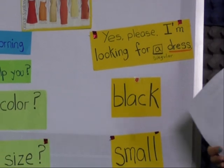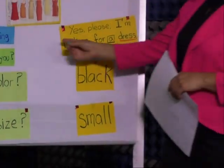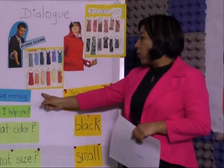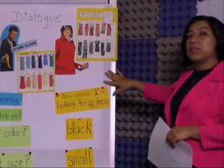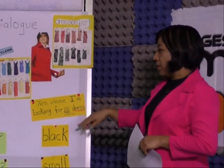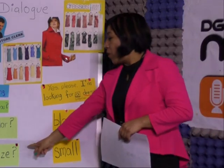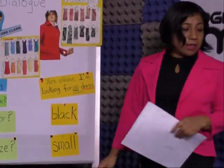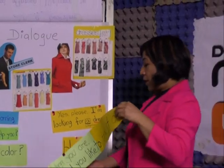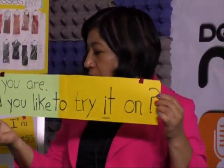Trabajamos con un diálogo muy sencillito. Vamos a recordar cuál era ese diálogo. Empezamos con lo que decía el Store Clerk: "Good morning, can I help you?" Y contestaba The Customer: "Yes, please, I'm looking for a dress." Store Clerk: "What color?" Customer: "Black." Store Clerk: "What size?" Customer: "Small." Y después nuestro Store Clerk decía: "Here you are. Would you like to try it on?"